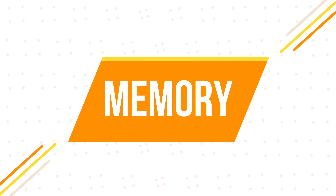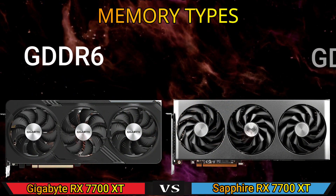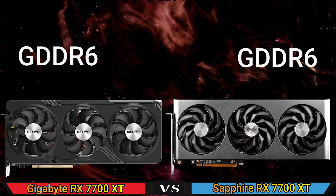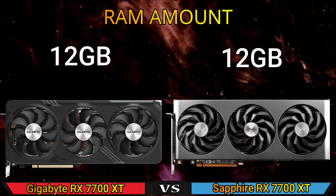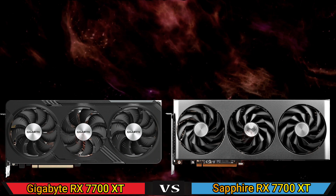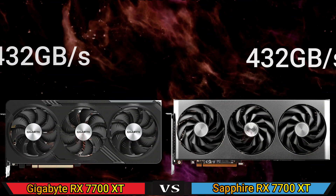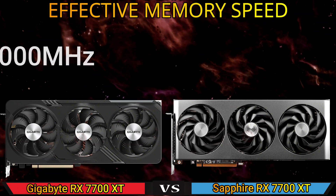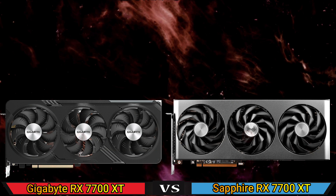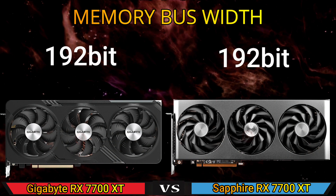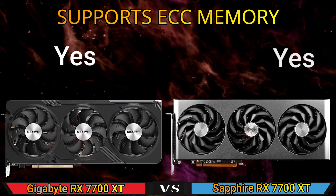Part 3: Memory. Memory type. RAM amount. Maximum memory bandwidth. Effective memory speed. Memory bus width. Support ECC memory.